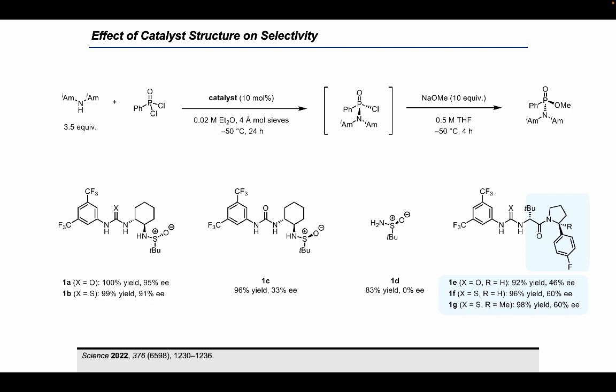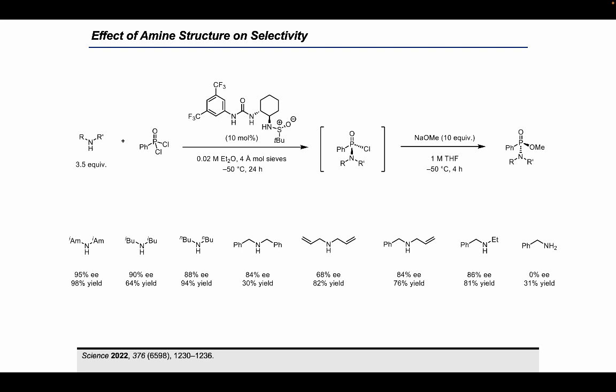Next, we examined the effect of amine structure on enantioselectivity and observed some interesting effects. Diisoamylamine reacted to form the product with 95% ee, the highest level of enantioselectivity of all amines tested. Generally, dialkyl secondary amines react with the highest levels of enantioselectivity, while primary amines such as benzylamine affording racemic product. Beyond these observations, it is difficult to discern clear steric or electronic trends, with relatively large changes in selectivity in response to small changes in amine structure.